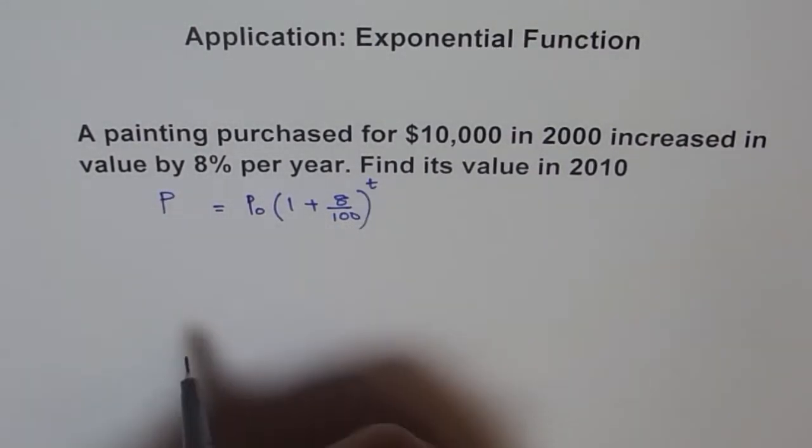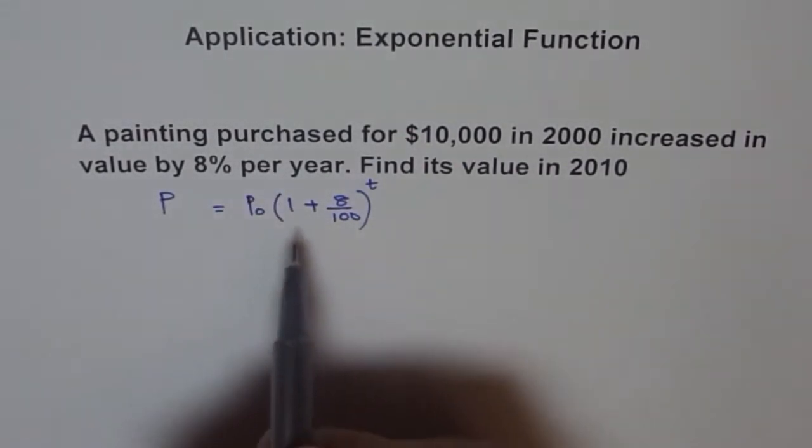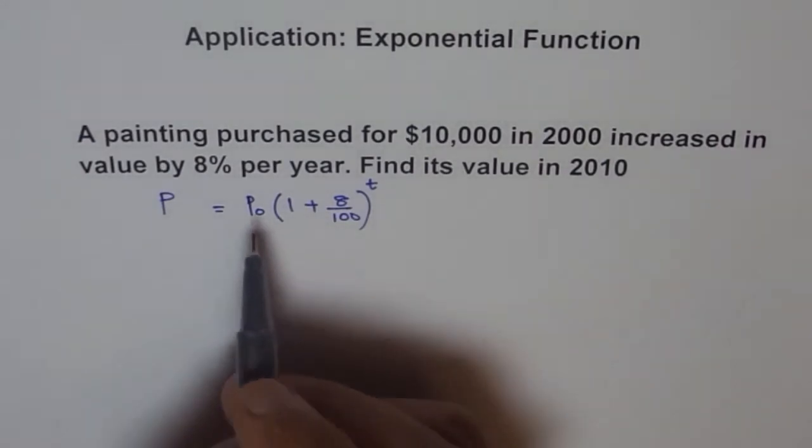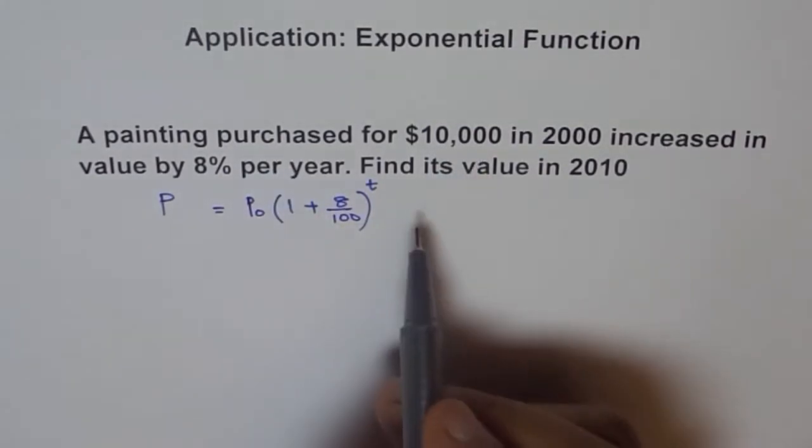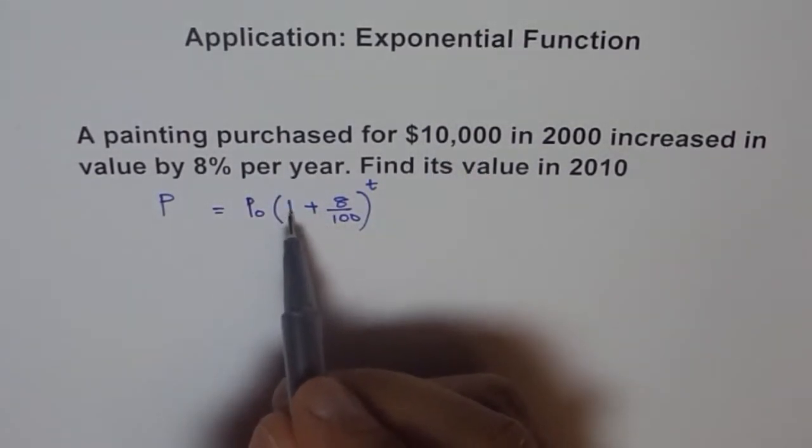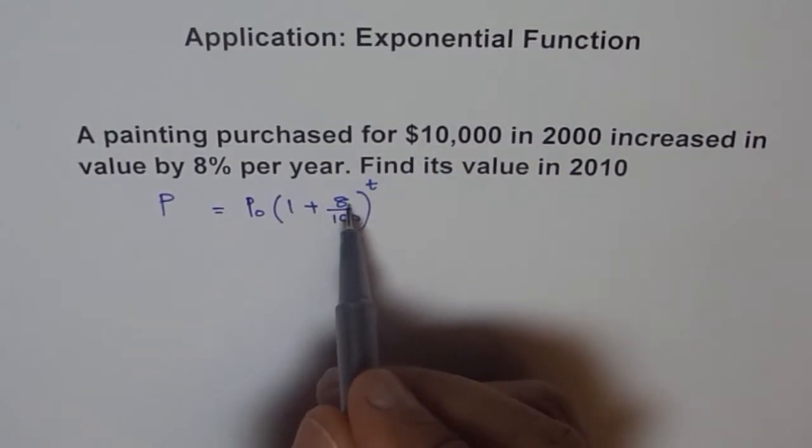After T years this is the worth, painting worth after T years. I hope you understand the formula. Here P0 is your initial amount, the amount at which the painting was purchased. It is $10,000. And times 1, actually 1 plus, because 1 is its initial cost. And 8% is a cost appreciation per year, 8%.